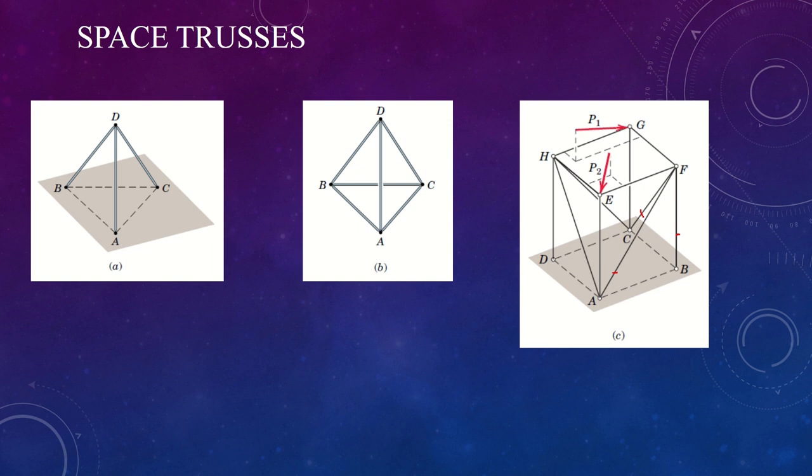These three additional bars, such as CG and FG right here, are attached to the three fixed points C, F, and H, and therefore fix G in space.